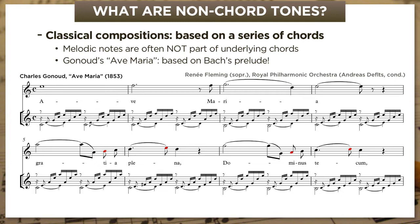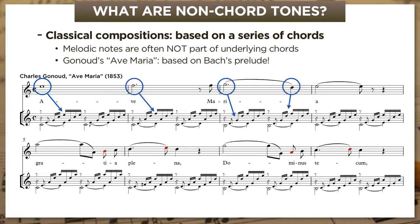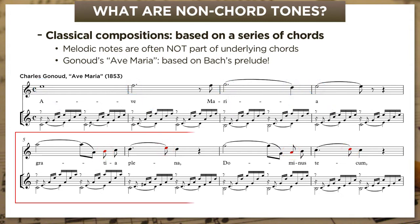Initially, Gounod's melody uses only tones from the underlying chords: the E from C major, the F from the D minor seventh, G and D from the dominant chord, and E again from the tonic. But in the second system, he starts to use notes that are not in the underlying chords. These—circled in red—are called non-chord tones, or non-harmonic tones. Let's zoom in on bars 5 and 6 to see what he's done.